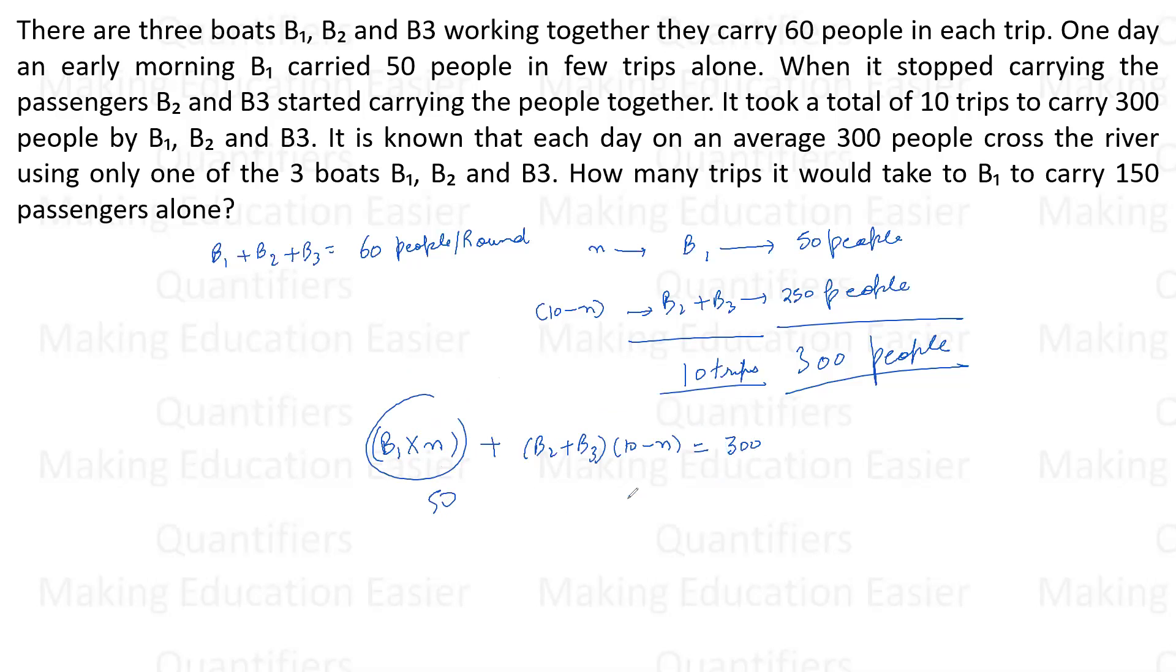B1 into N is 50. B2 plus B3 into N is 250. So total is 300. This is what I can make. Or if I see when I'm writing it this way, I may or may not be able to use this equation directly here. So it will be better for me to write it like this. That B1 into N is equal to 50. Then B2 plus B3 into 10 minus N is equal to 250.